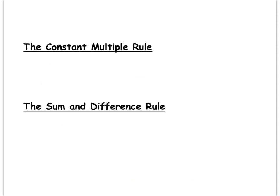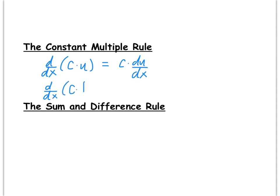Next is the constant multiple rule, which allows us to take the derivative of a constant times a function. In Leibniz notation, the derivative with respect to x of a real number constant c times a function u is c times du/dx. In prime notation, the derivative of c times f of x is c times f prime of x. A helpful way to think of this: constants float along for the ride when you're taking derivatives.